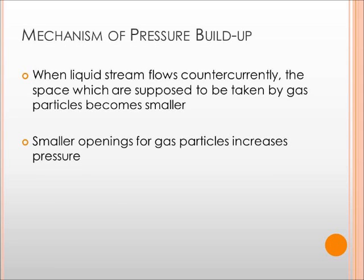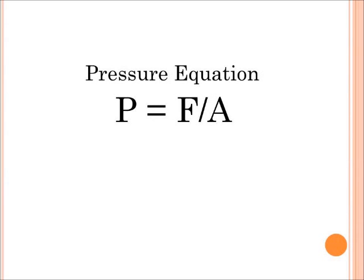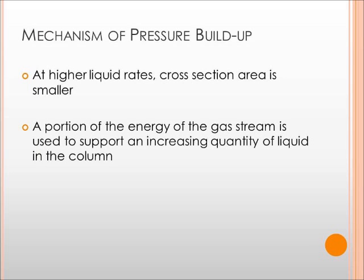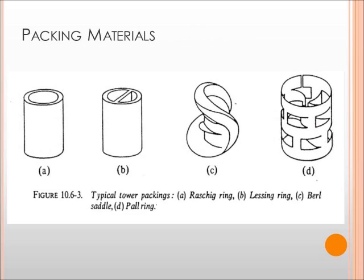Pressure builds up when the liquid stream flows in the space which are supposed to be taken by the gas particles become smaller. Recall the indirect relationship of pressure to area. The smaller openings for gas particles increase pressure. At higher liquid rates, cross-section area is smaller and a portion of the energy of the stream is used to support increased quantity of liquid in the column.